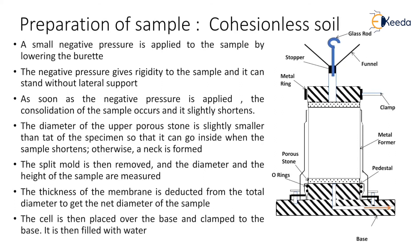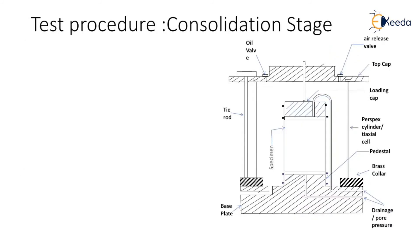The cell is then placed over the base and clamped, then filled with water. Now let us start with the test procedure for the triaxial compression test. There are two stages: consolidation stage and shearing stage. This consolidation stage is eliminated in case of an unconsolidated test, but for unconsolidated drained or consolidated undrained tests the following procedure is followed.